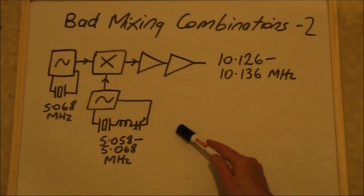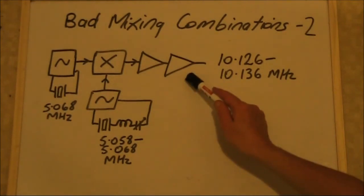In a receiver, that results in spurious responses being picked up. In a transmitter, it results in a dirty output that's hard to filter.